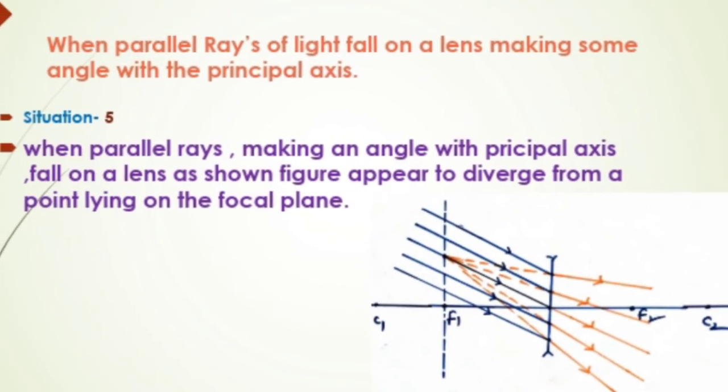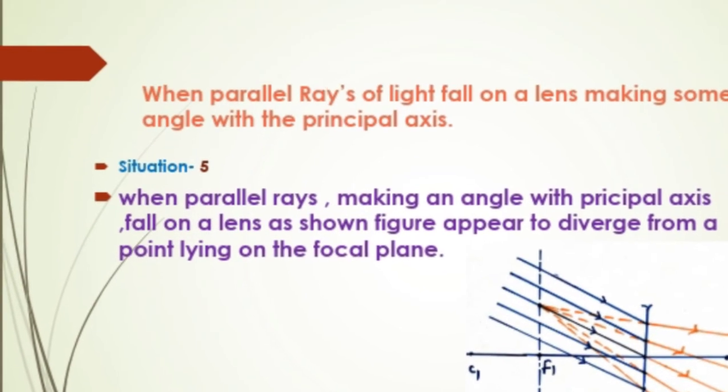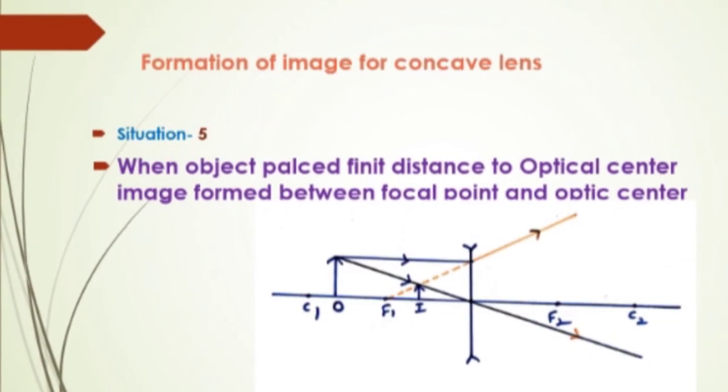This is one of the situations when parallel rays making an angle with principal axis fall on your lens as shown in figure.